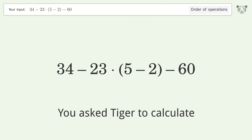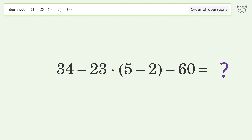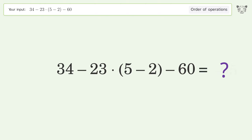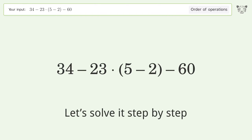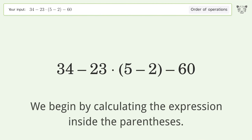You asked Tiger to calculate this. It deals with the order of operations — the final result is negative 95. Let's solve it step by step. We begin by calculating the expression inside the parentheses.